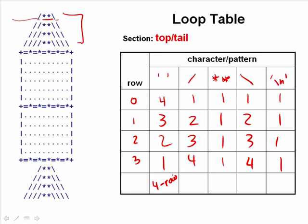So we're printing essentially four minus row spaces. If we look at the slashes, we're printing row plus one slashes, because as the row goes 0, 1, 2, 3, we're printing 1, 2, 3, 4 slashes. We're always printing one star-star, always printing row plus one backslashes, and always printing one new line character in each row. So what we want to do is write a nested loop that loops from 0 to 3, with nested loops inside to print spaces, slashes, backslashes, and also prints the stars and the new line characters.